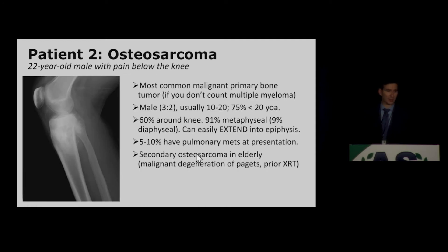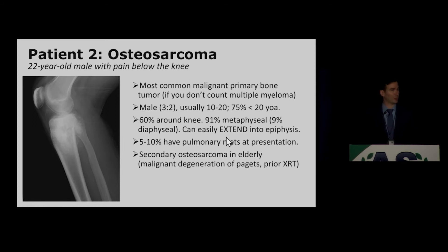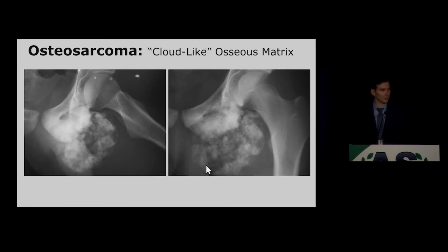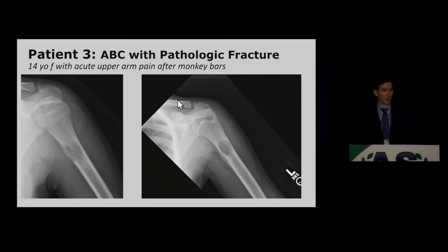Osteosarcoma is the most common malignant tumor of bone with a slight male predominance. About two-thirds of lesions occur around the knee, so that's where you'll often see these in the ED. 75% of tumors present in patients under 20, and 90% are metaphyseal, though they can extend into the epiphysis or diaphysis. This is the classic cloud-like osseous matrix — these are bone-forming tumors producing a cotton ball-like appearance. Another example arose from the inferior pubic ramus in a young man.